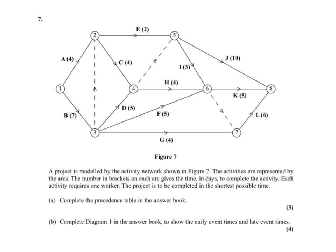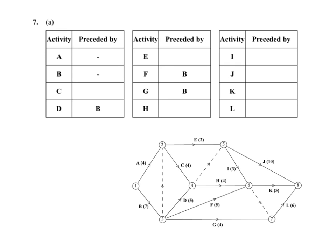The wording, before I even read it, I know roughly what it's going to say. It's a project modeled by the activity network. The activities are represented by the arcs. The numbers in brackets are the time in days to complete the activity. Each activity requires one worker. The project is to be completed in the shortest possible time. As usual, I've got to complete a precedence table and complete a diagram of early and late times. Let's do the precedence table first.